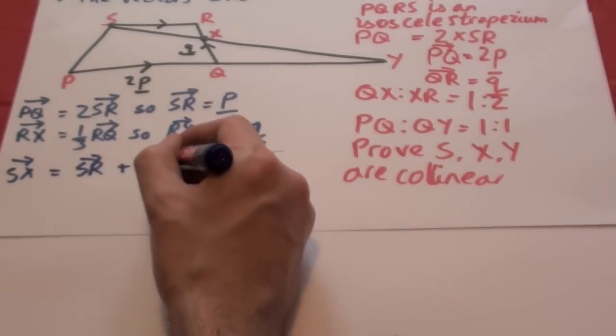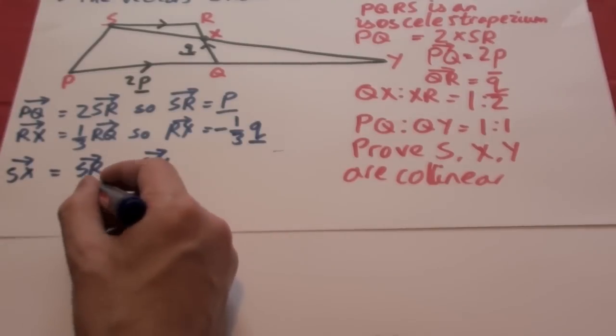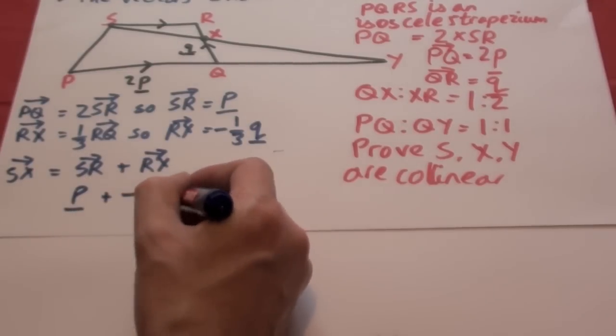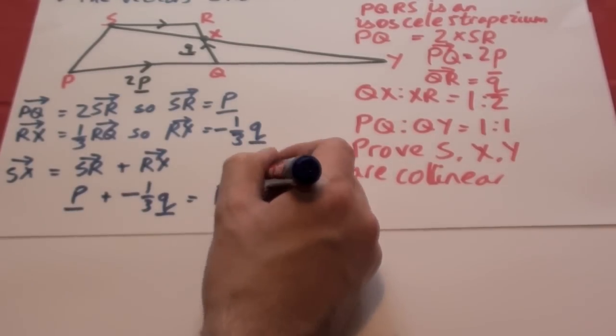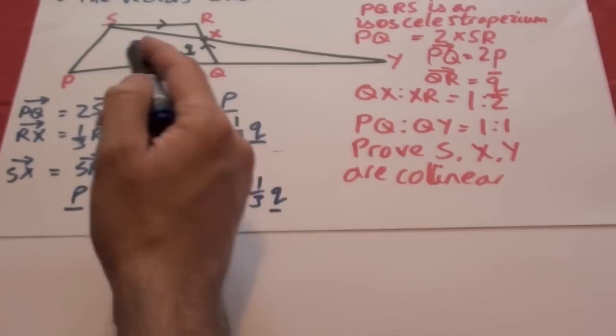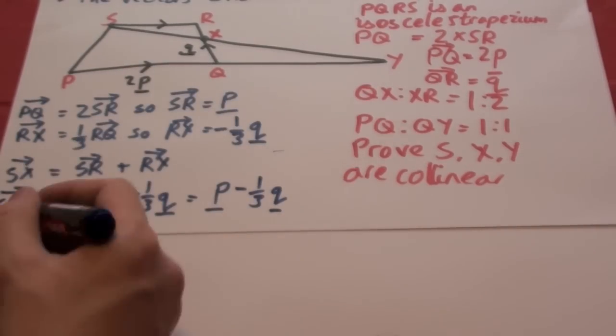So S of X is those two added together. So if you add together P plus minus one third of Q, we get P minus one third Q. So that's S to X.